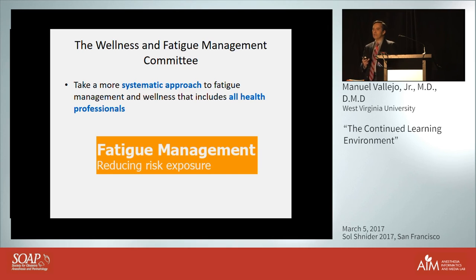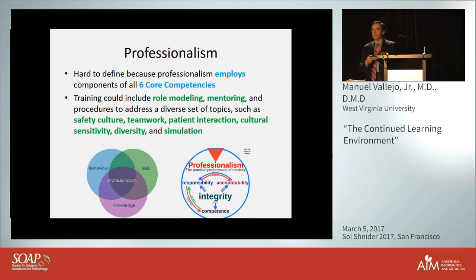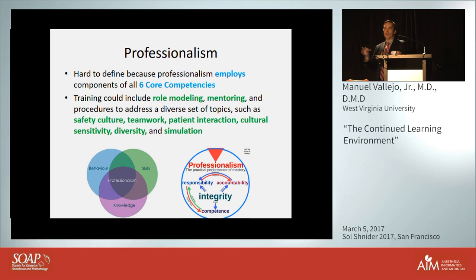Professionalism compromises everything. You want to teach integrity, accountability, and reliability. If you're not around, that person should be acting appropriately and taking care of patients in a good way — it employs all the components of the six core competencies. Role modeling is important, mentoring is important, the safety culture in the institution, teamwork, patient interaction, sensitivity, diversity, and also looking at simulation as a way to teach professionalism.